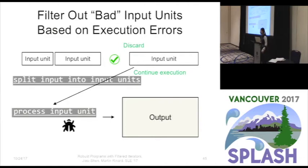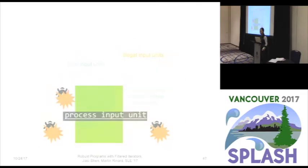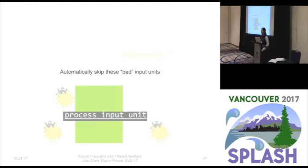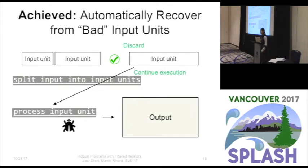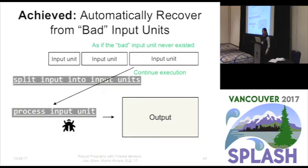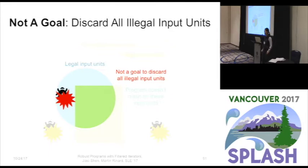Let's think about which input units will end up in the final result. The processing code may have bugs and may crash sometimes, and only the set of input units that execute without crashing will appear in the result. All the rest are bad input units that cause runtime errors. The language automatically discards these bad input units, so the program automatically recovers from runtime errors. Even though the processing code may still have bugs, it doesn't crash anymore — it continues execution as if the bad input unit doesn't exist. Note that we do not intend to discard all illegal input units, because even legal inputs can trigger bugs.